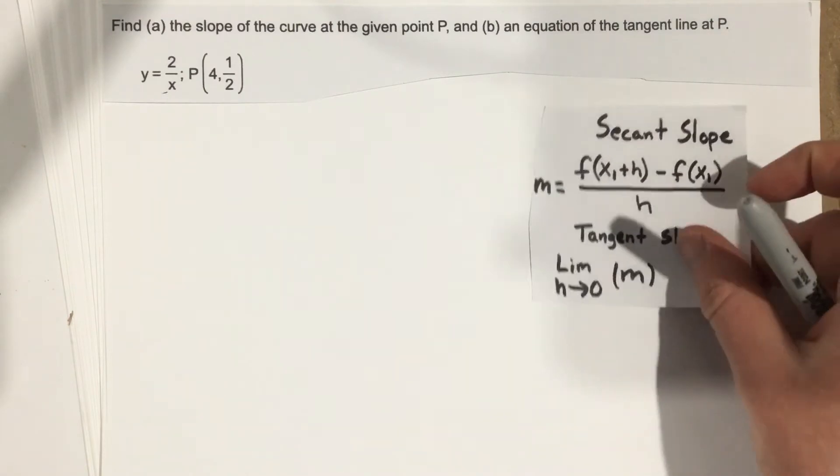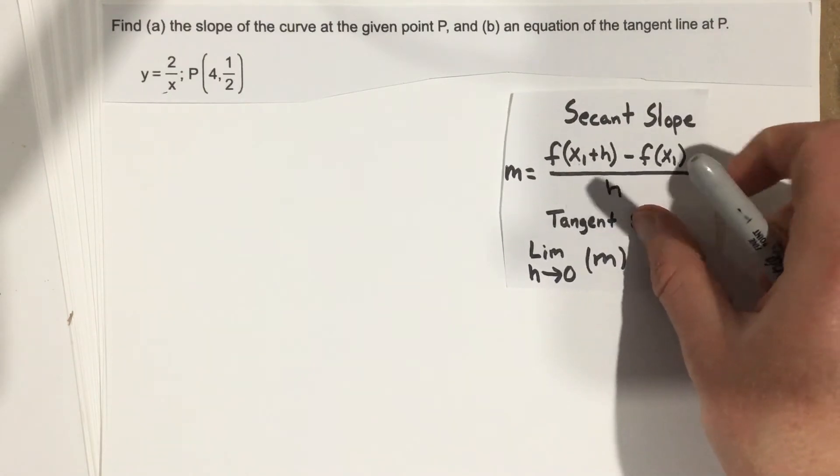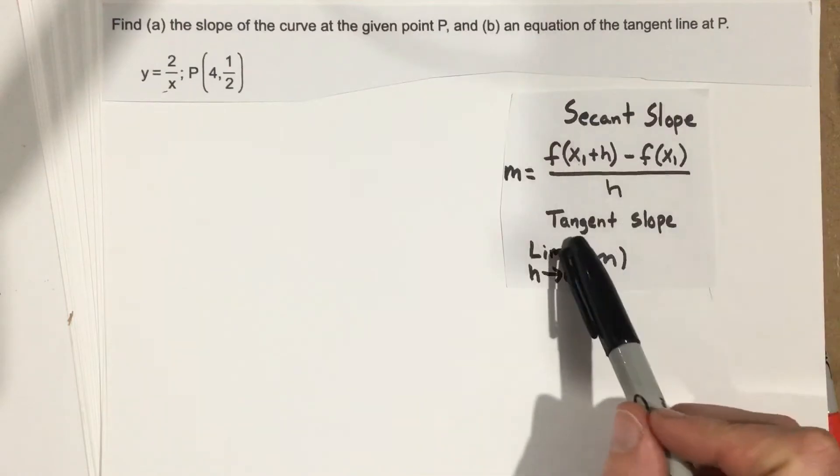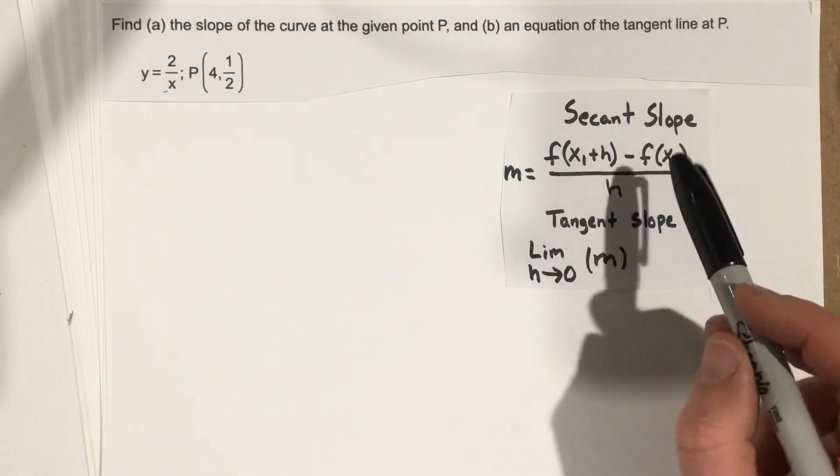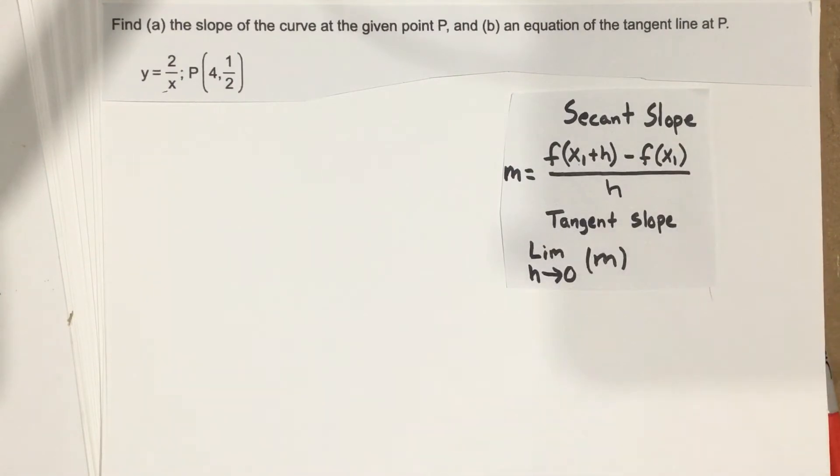So the first thing we do is we need to find the slope of the curve. And they say at point P, so we're looking for the tangent slope. Now this is the secant slope. This is how we would find it. And then we combine that with this tangent slope to actually get the slope at point P.